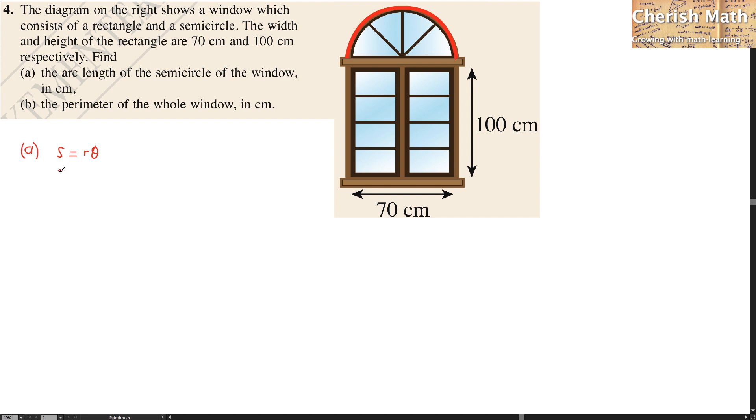For this arc, s equals the radius. I am getting it by using 70 cm divided by 2, because 70 is in fact the diameter of the semicircle.